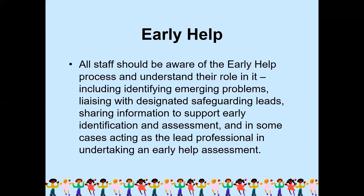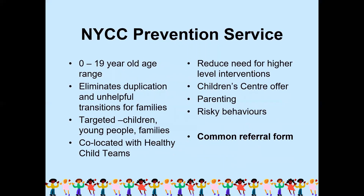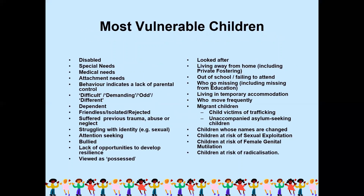All staff should be aware of the early help process and understand their role in it, including identifying emerging problems, liaising with the designated safeguarding lead, sharing information to support early identification and assessment, and in some cases acting as a lead professional in undertaking an early help assessment. The prevention service covers the 0 to 19 age range, eliminates duplication, and targets the most vulnerable children — including those with disabilities, special needs, medical needs, attachment needs, behavioral indicators, migrant children, children out of school, and children at risk of sexual exploitation.